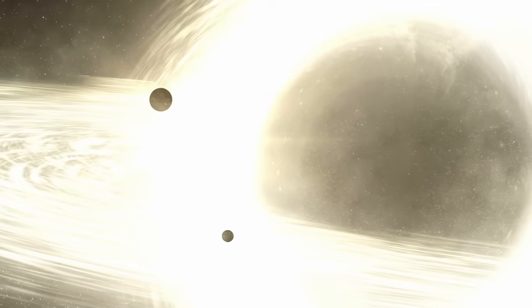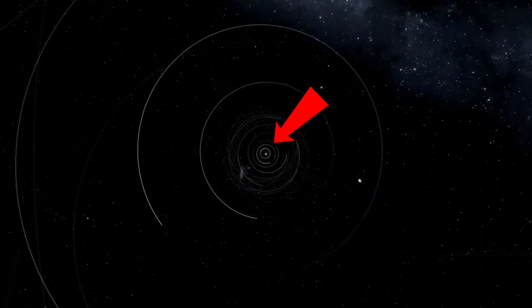People think that black holes, everything just falls into it. But of course, everything doesn't just fall into things. If you turn the sun into a black hole, the Earth would carry on orbiting around it in exactly the same way.